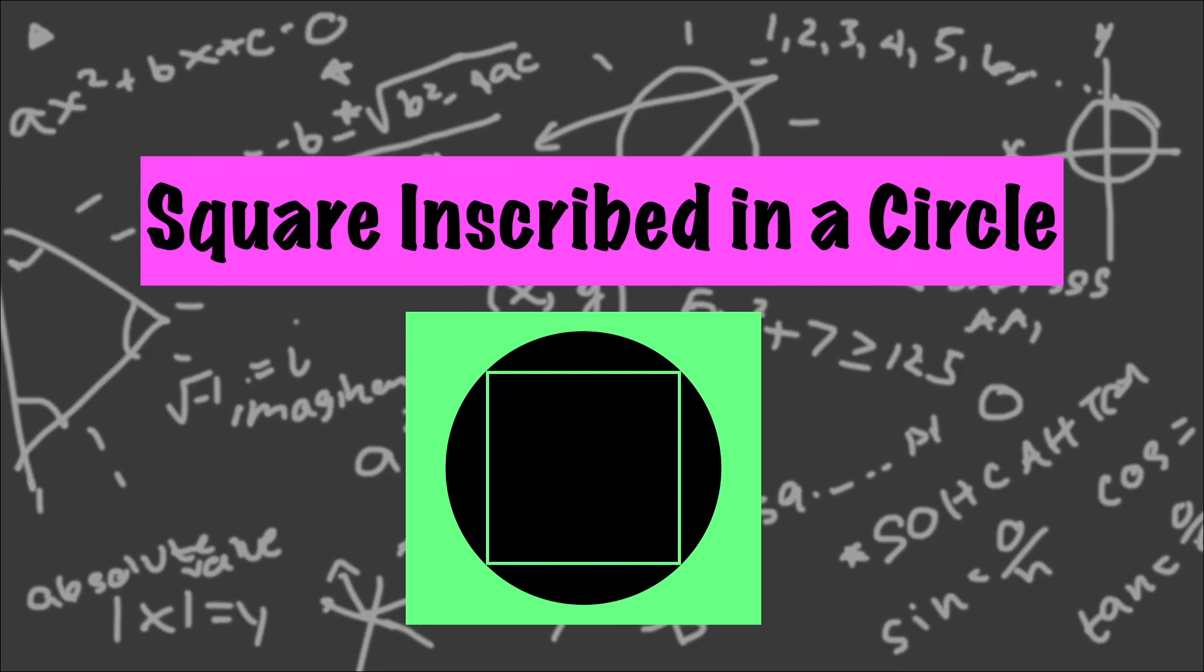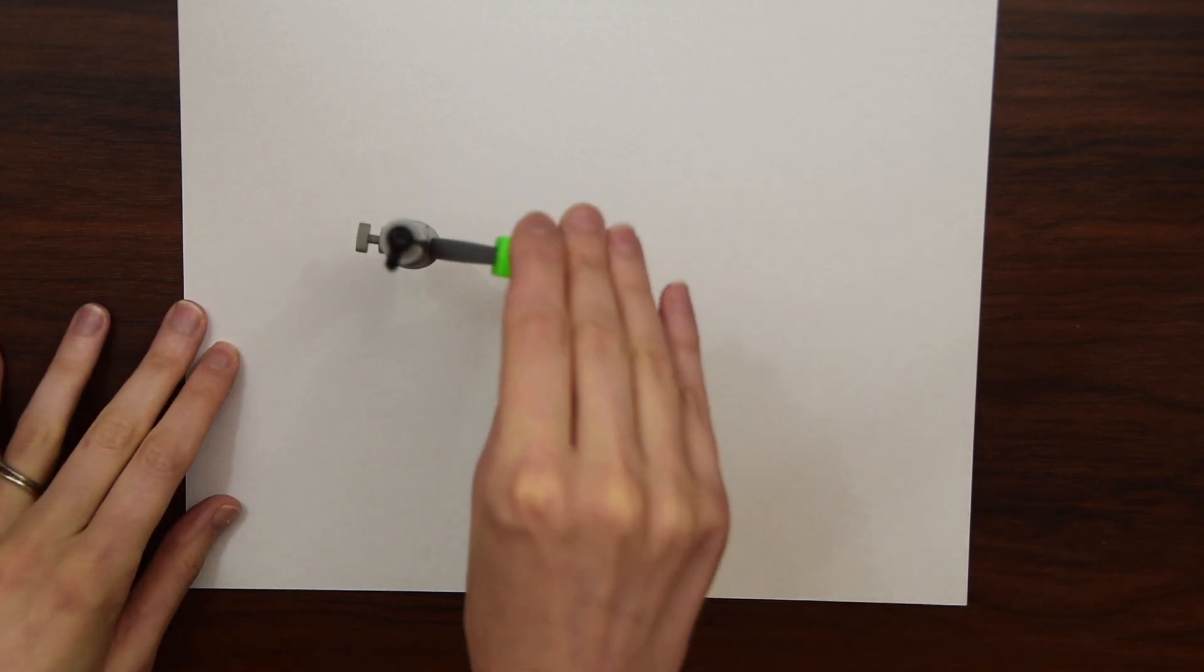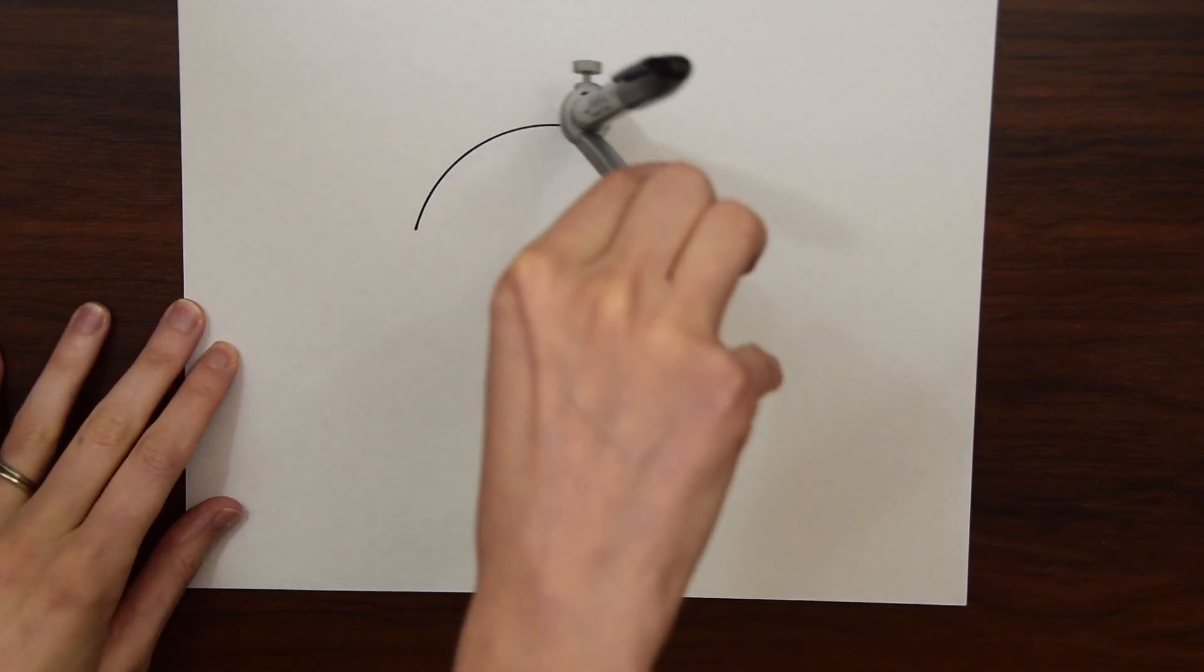So the first step to drawing a square inscribed in a circle is to draw the circle using a compass. So we have our compass here and we're just gonna swing it around all the way around.